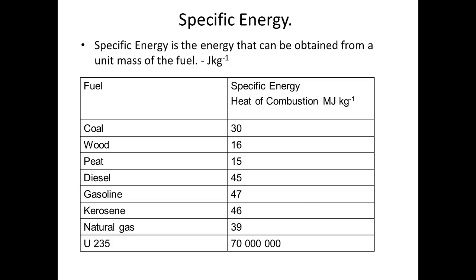Let's have some examples here. Coal gives 30 million joules for every kilogram that is burnt. Wood gives around 16, which is roughly half that, but it burns very quickly so it releases heat quickly. Peat burns somewhat slower and is able to release 15 million joules for every kilogram that is burnt.